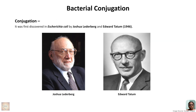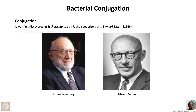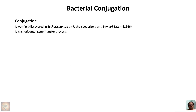Conjugation is one method of genetic recombination in bacteria. It was first discovered in Escherichia coli by Joshua Lederberg and Edward Tatum in the year 1946. Bacterial conjugation is a horizontal gene transfer process — it is a lateral gene transfer where genetic material is transferred between unrelated organisms.